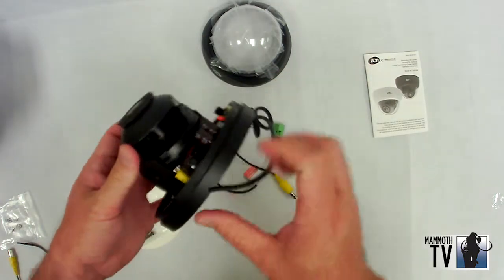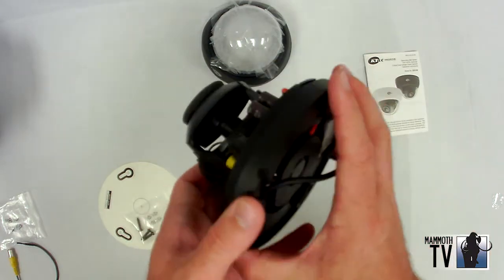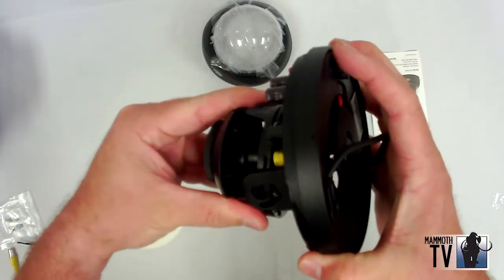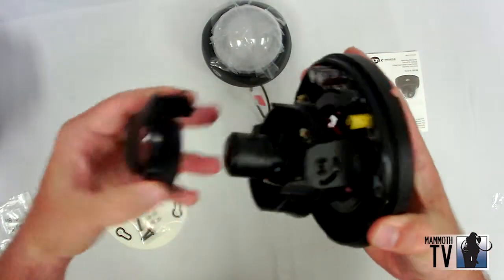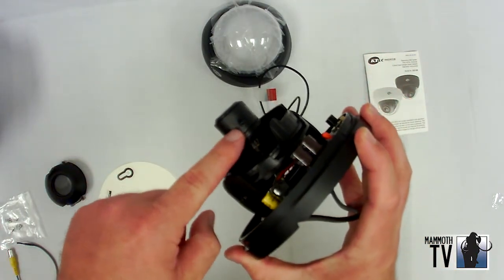Then your adjustments for the varifocal lens would be—kind of hard to see in there. Take that part off. Your adjustments are right in here to adjust the varifocal lens.